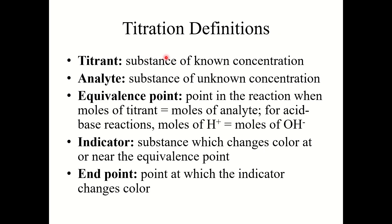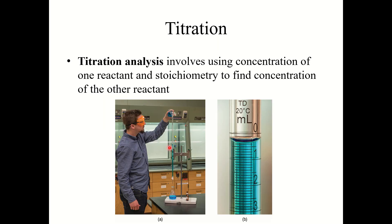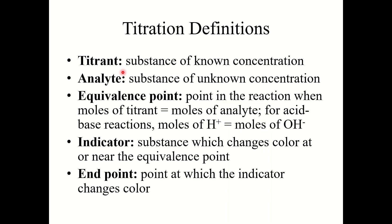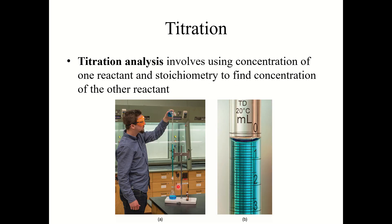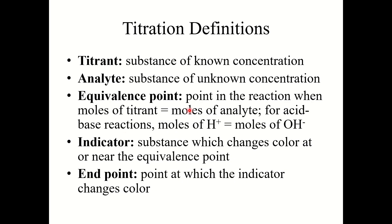A few definitions: The titrant is the substance of known concentration, typically put in the burette — the long tall piece of glassware. The analyte is the substance of unknown concentration, typically placed in the beaker below. The equivalence point is when moles of titrant equals moles of analyte; for acid-base reactions it's where moles of H⁺ equals moles of OH⁻. The indicator is the substance which changes color at or near the equivalence point, and the endpoint is the specific point at which the indicator changes color. In our experiment we'll use phenolphthalein, which changes from clear to pink when the reaction shifts from acidic to basic.